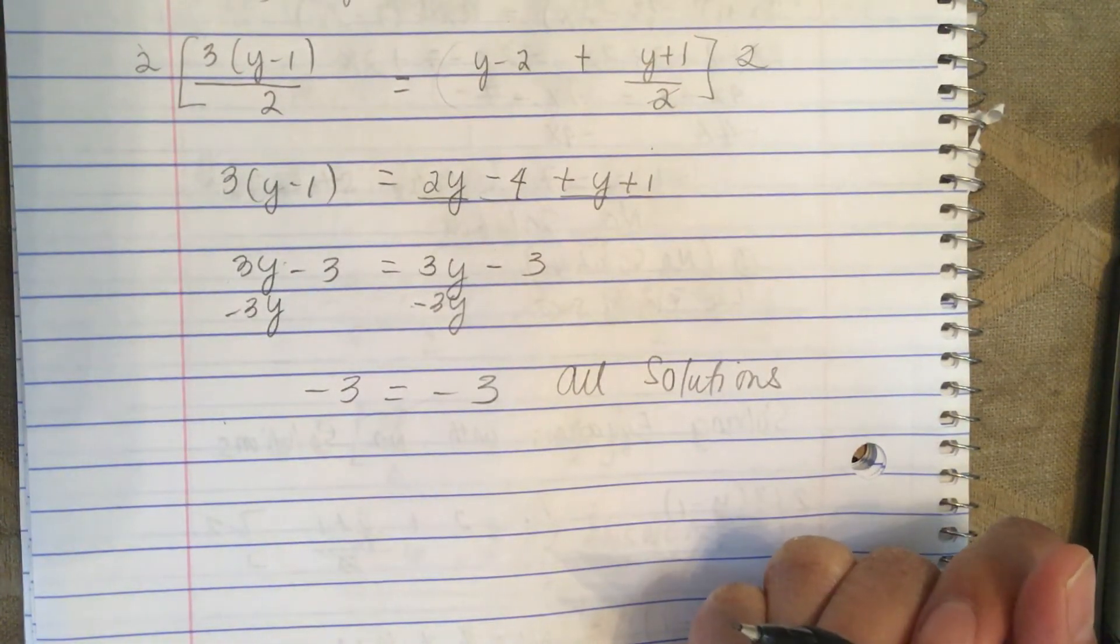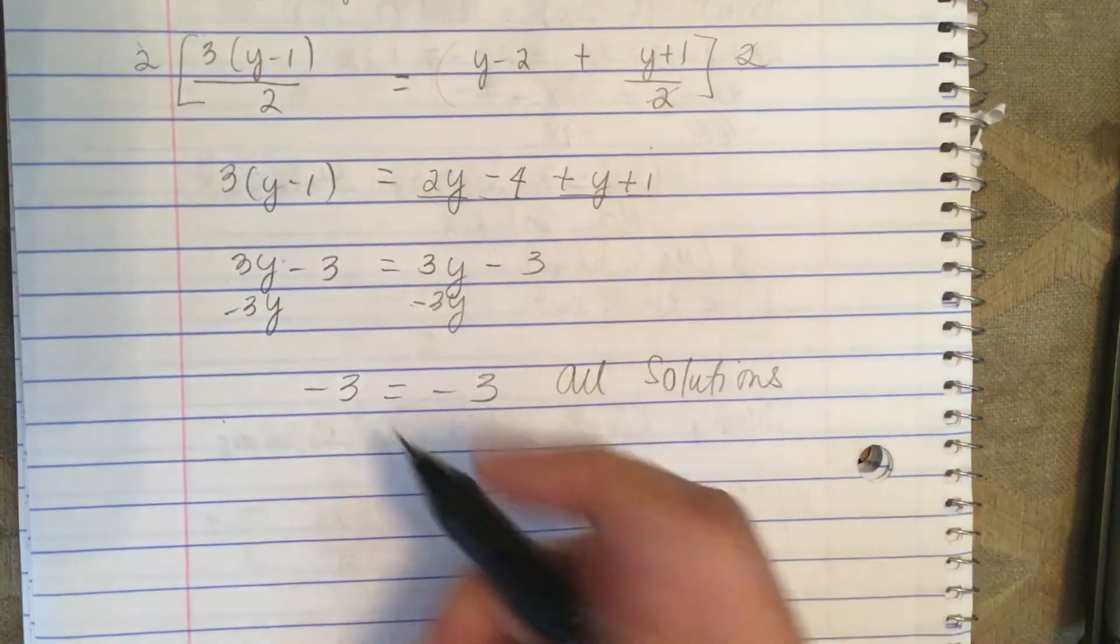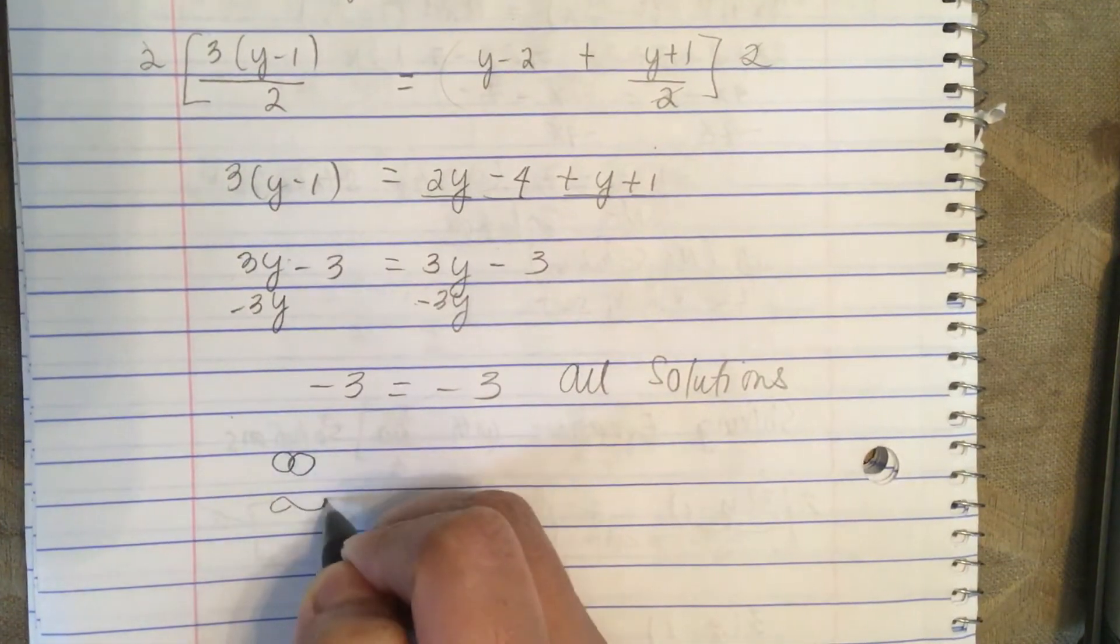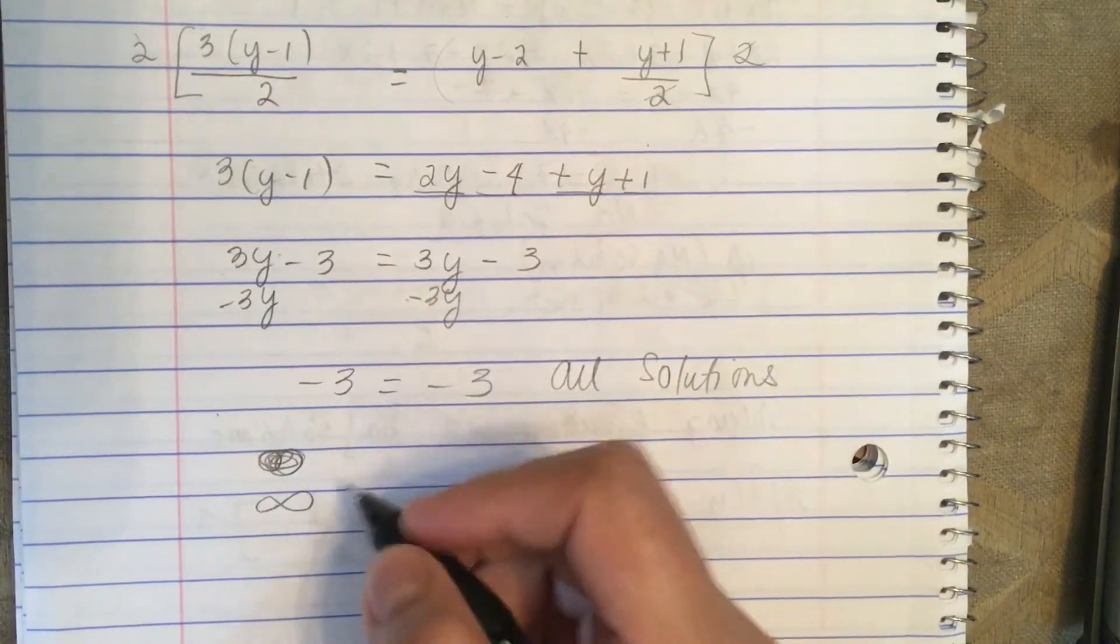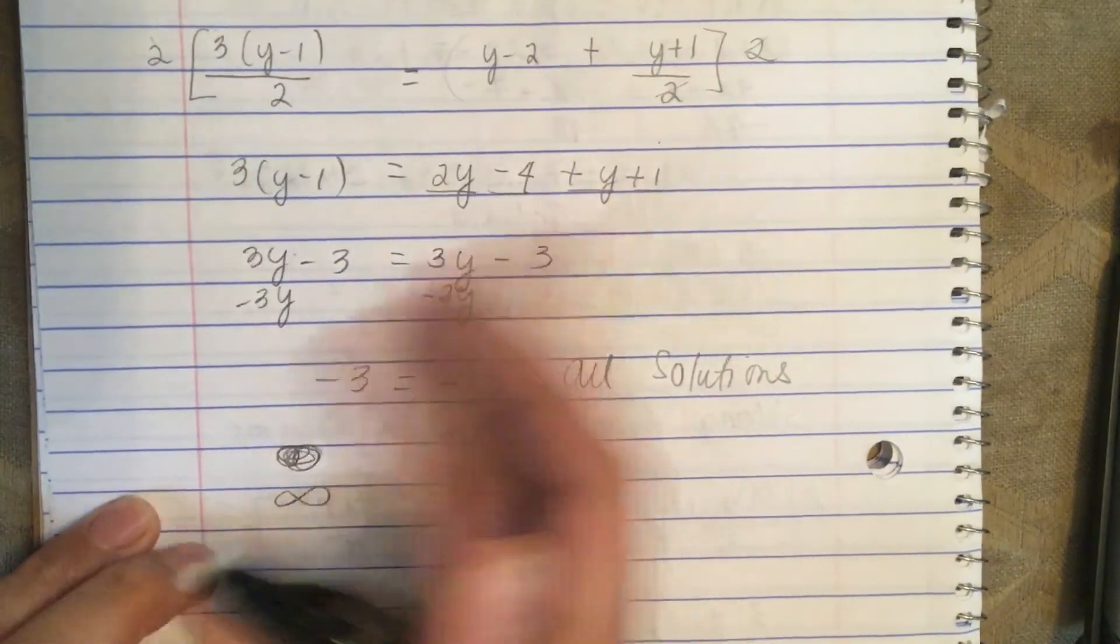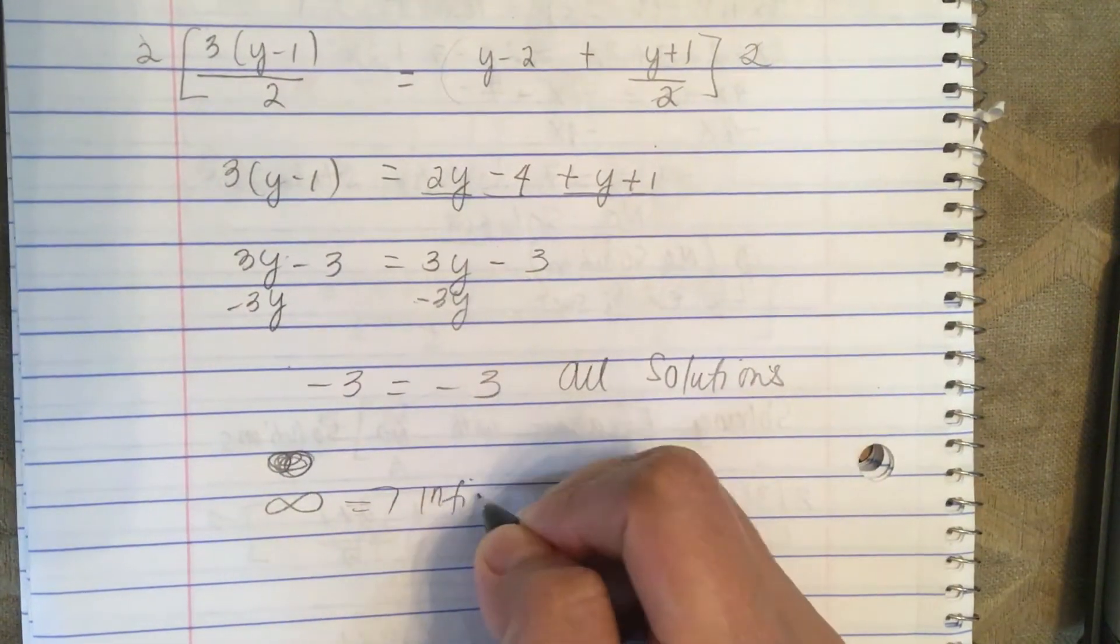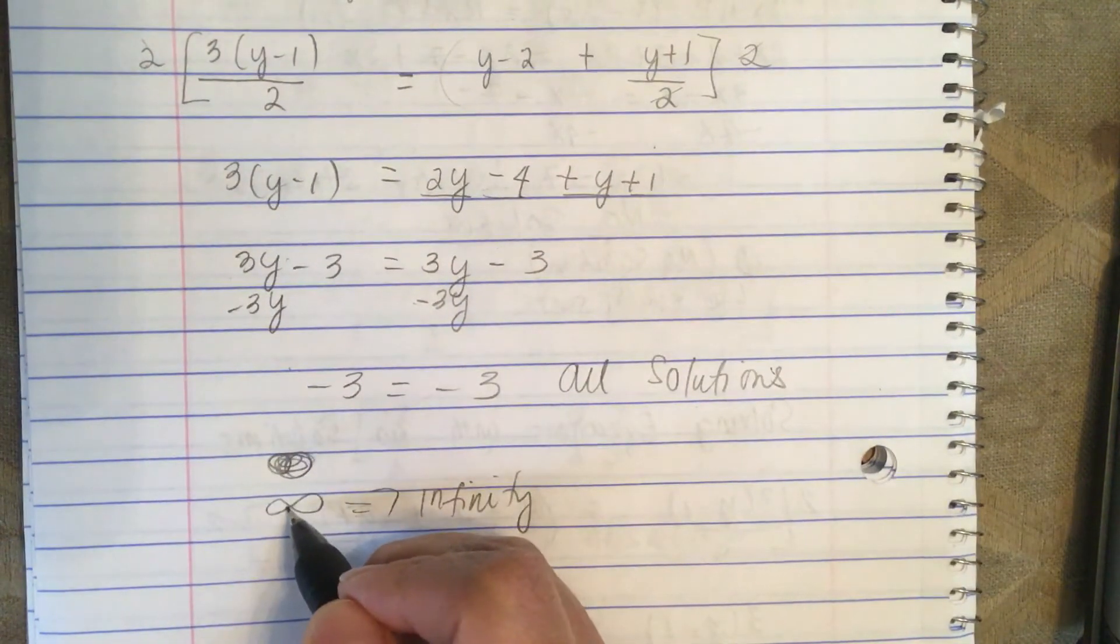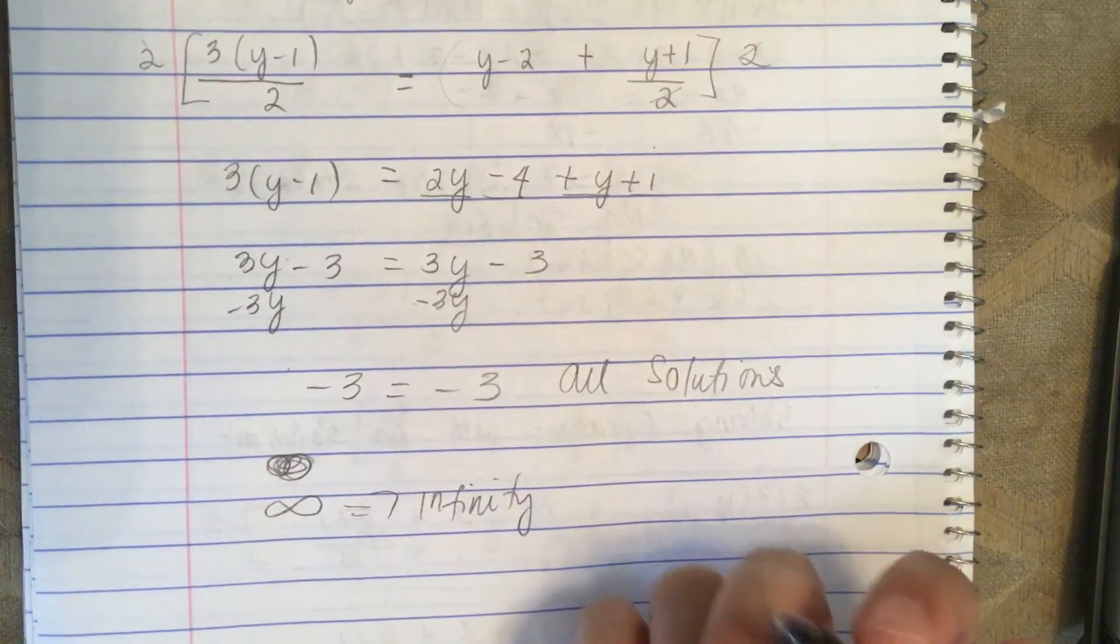Sometimes we use the symbol, this symbol. This symbol means infinity - it's just like an 8 on its side. This represents infinity.